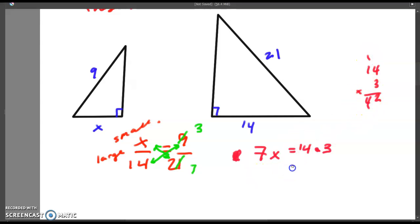42 is equal to 7x. And in order to get x alone, we divide by 7. 42 divided by 7 is going to be equal to 6. So our final answer would be the value of x is 6, x equals 6.